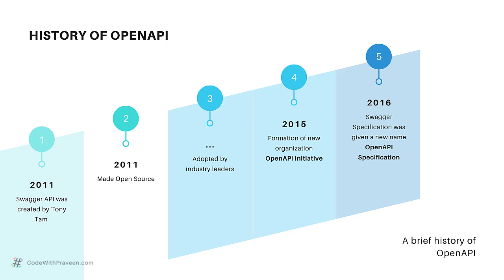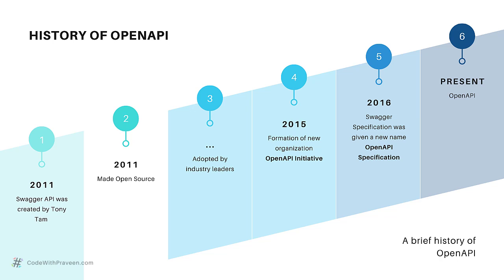In January 2016, the Swagger specification was renamed to the OpenAPI specification to separate the specification from various tools. Currently, the term Swagger is used to refer to the API tools provided by SmartBear Software, and the term OpenAPI is used to refer to the API specification.